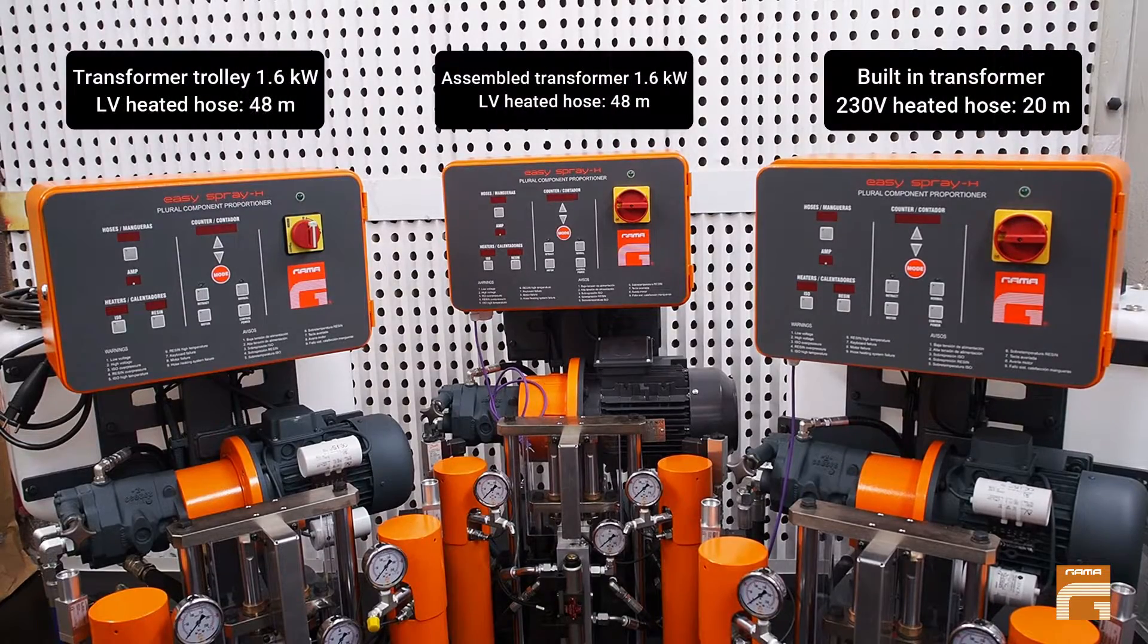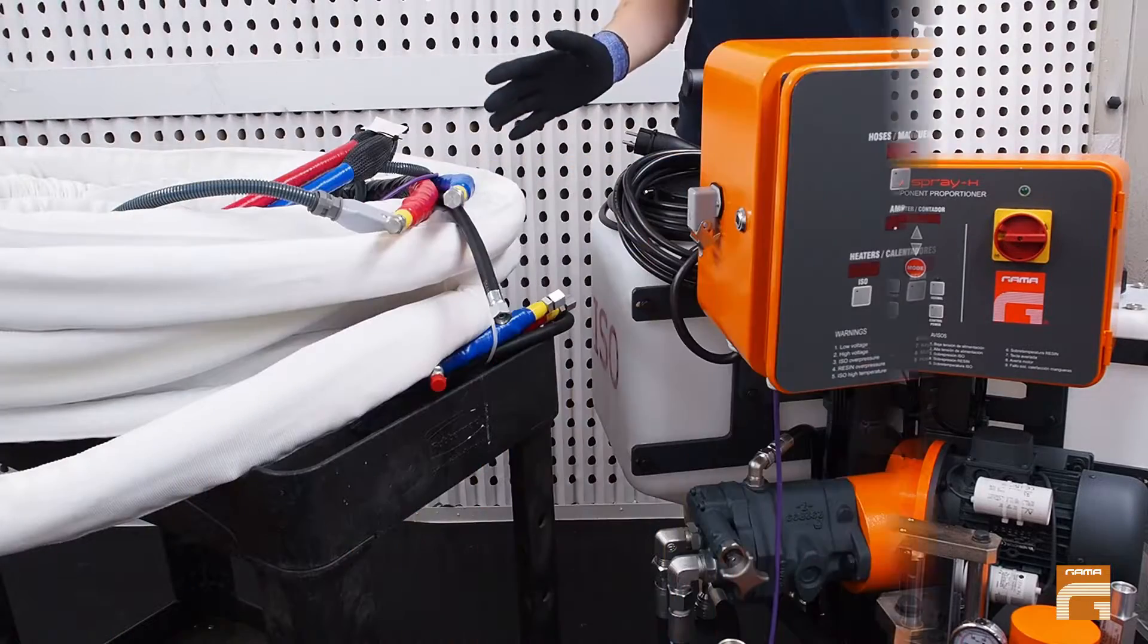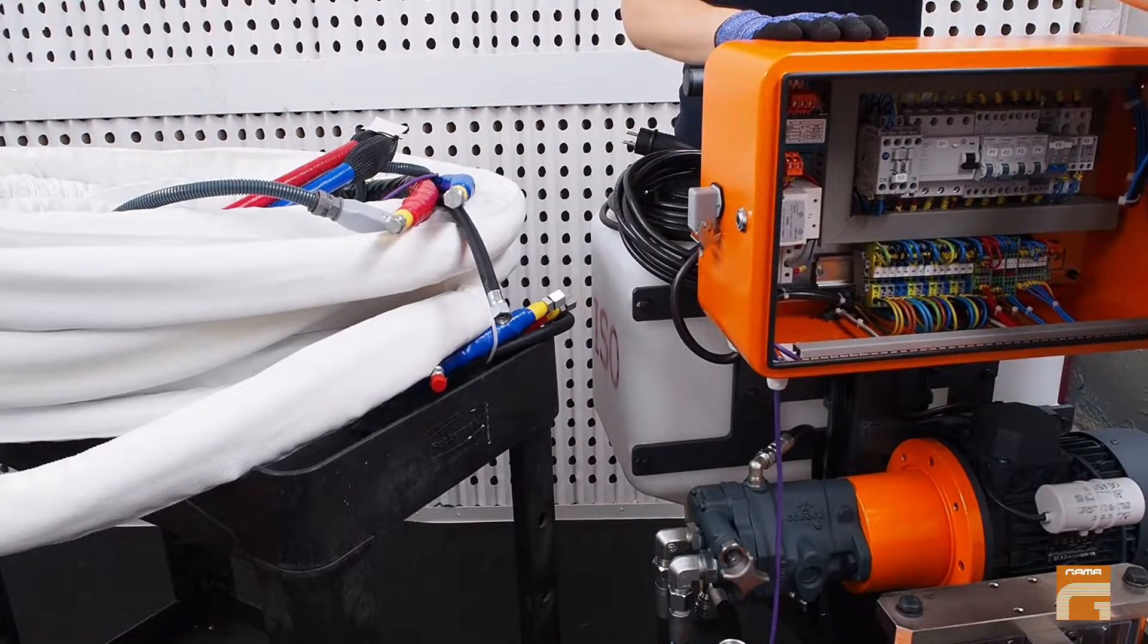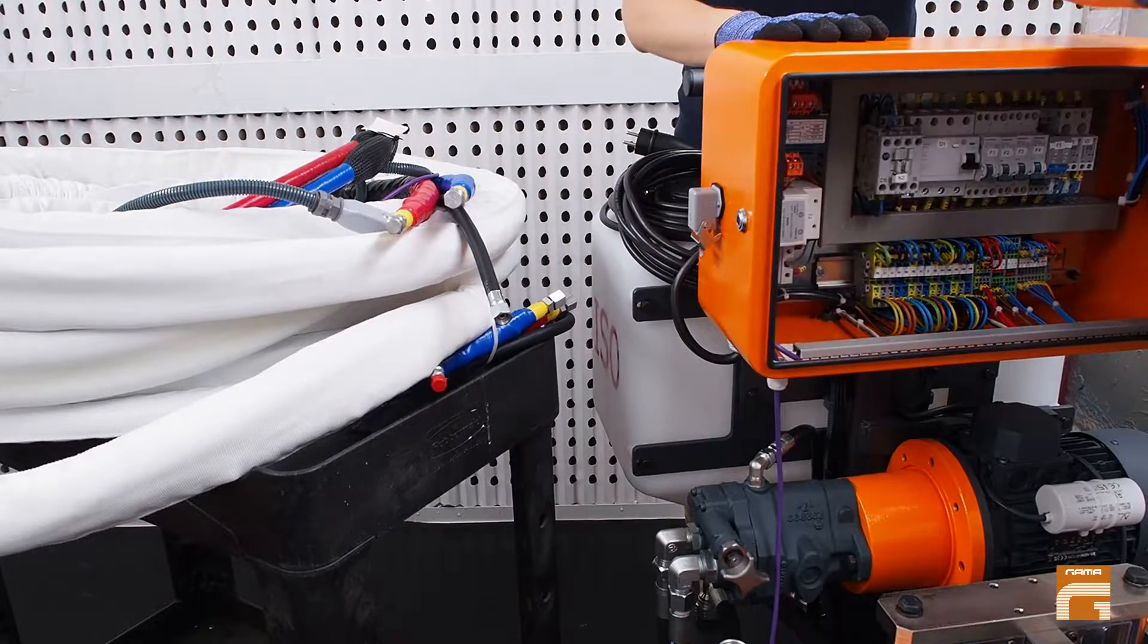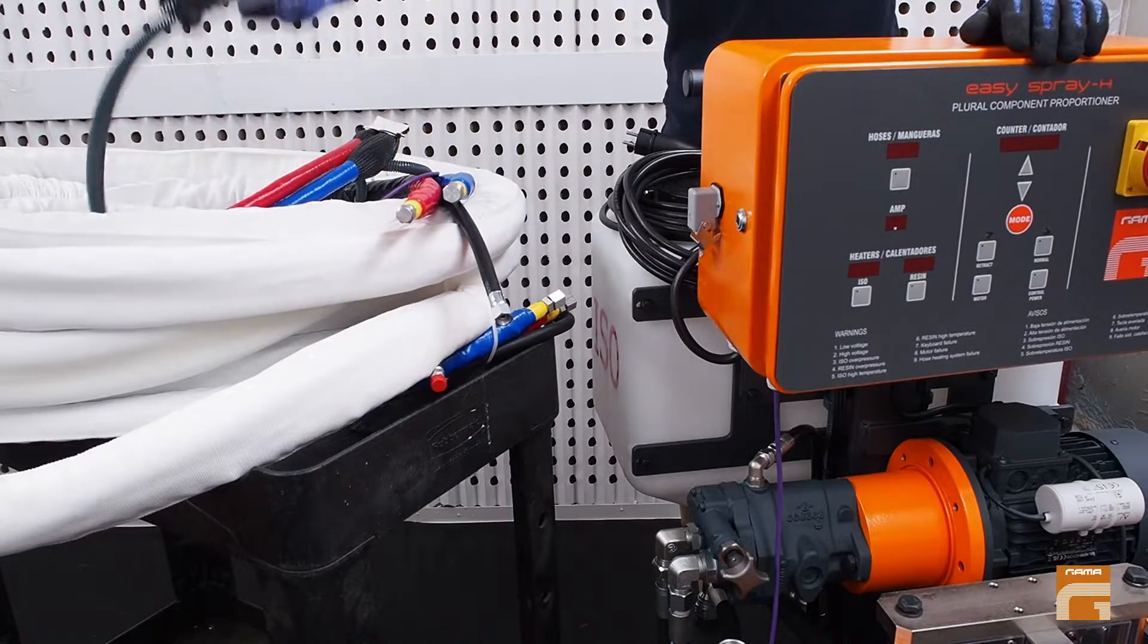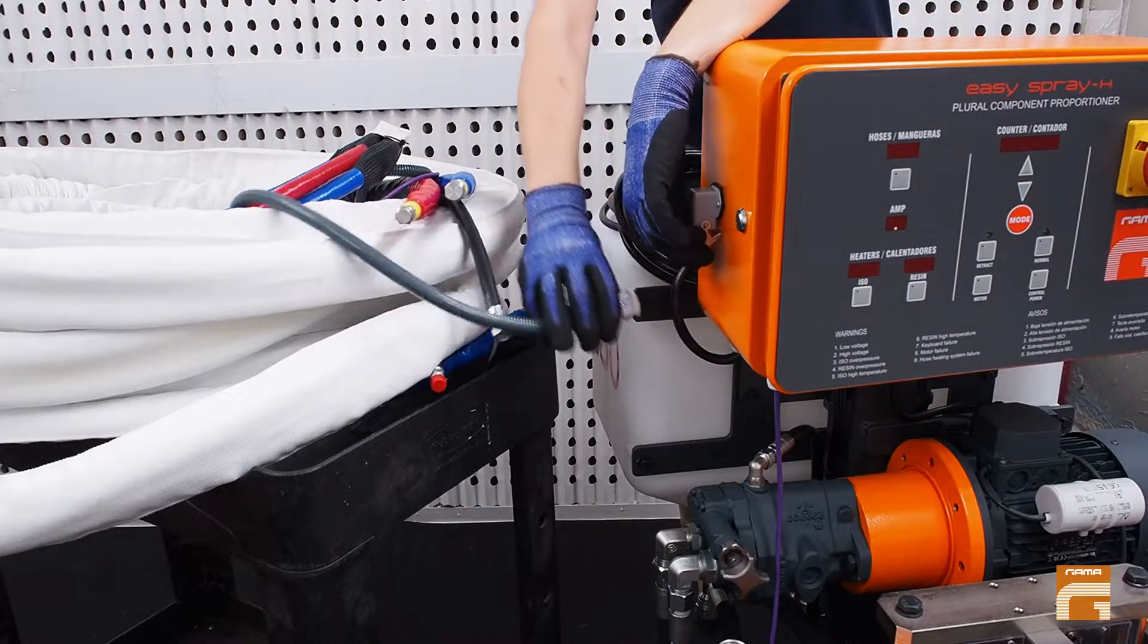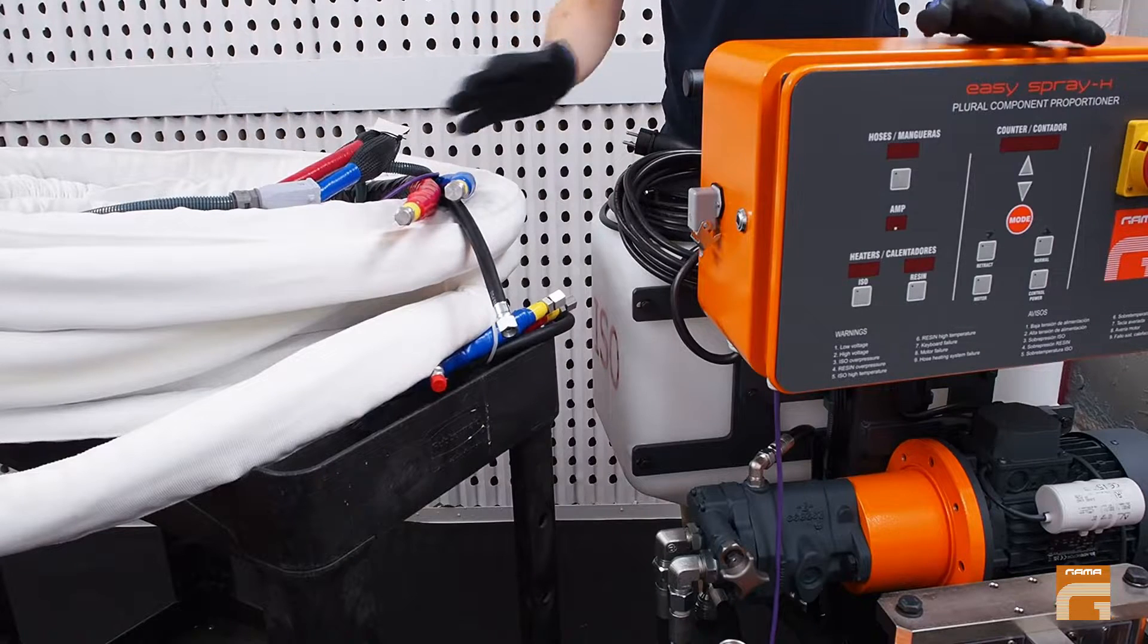Option one: a machine with a built-in hose transformer combined with a special 20 meter single-phase heated hose with automatic temperature control. This option is offered by default as this is the most convenient and portable solution if you do not need longer hose because it is not extendable.